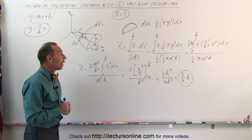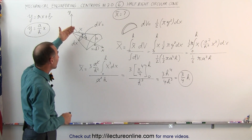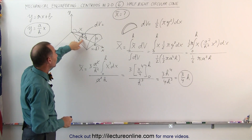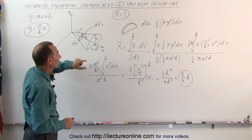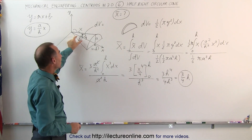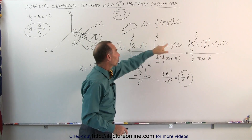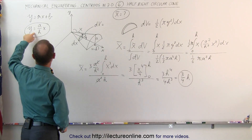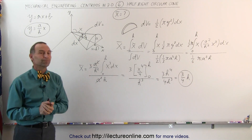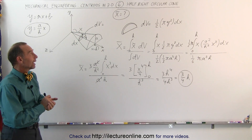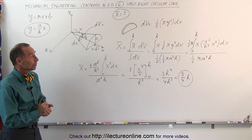That will not be the case for the y-coordinate, which we'll show in the next video. To summarize: we found the slice, identified the x-coordinate of the small slice's center as x, defined DV as half the base area times the thickness, and replaced y squared using the equation of the top ridge of the half-circular cone.